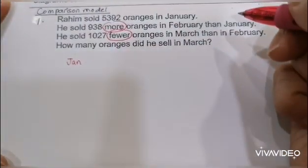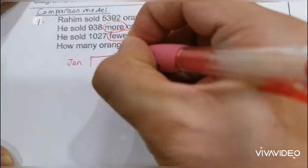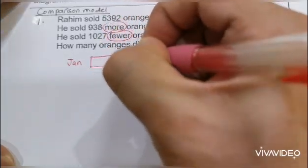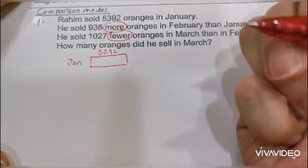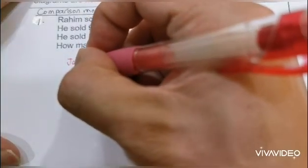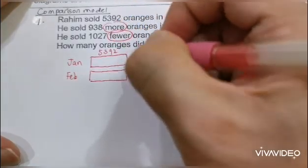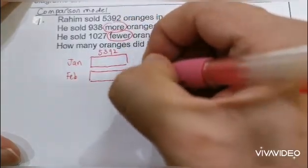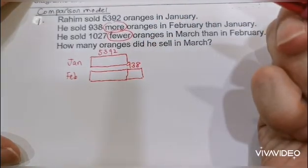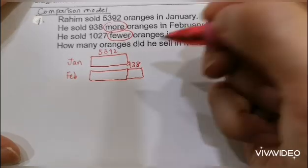Let's draw a simple model. Let's talk about January first — Raheem sold 5,392. So let's draw 5,392 for January. In February he sold 938 more oranges than January, so 'more' means I draw it slightly longer — 938 longer.